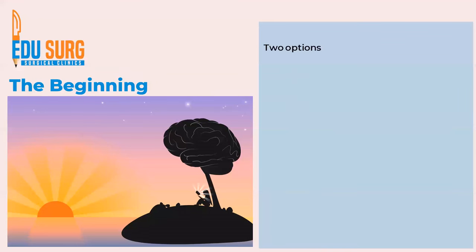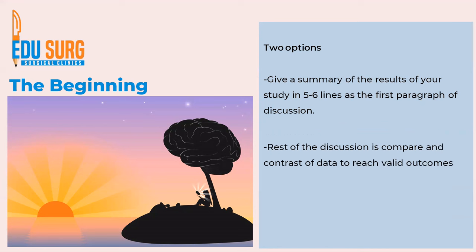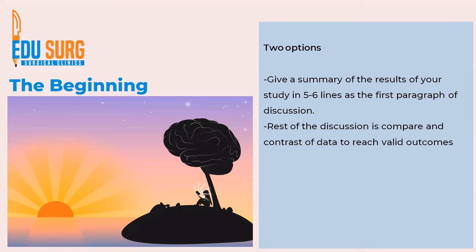There are two ways to begin a discussion, and understand that it's the first two paragraphs that decide if the reader is going to read your article and benefit from it. One way is that after your observation and results, in the discussion give a summary of the results of your study in five to six lines or a single paragraph, and that becomes the first paragraph of discussion. If you can manage this, your rest of the discussion is simply the comparison and contrast of data with published literature to reach valid outcomes.